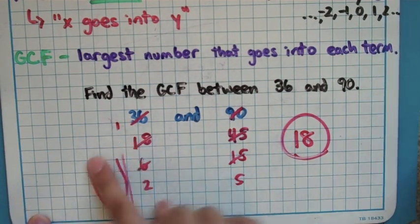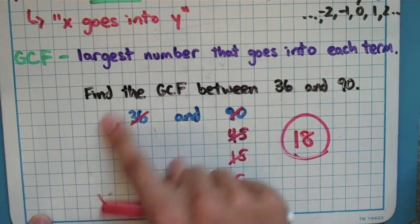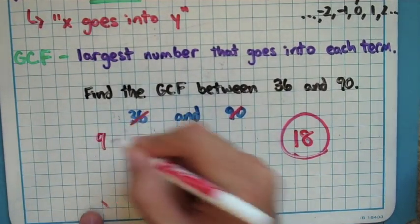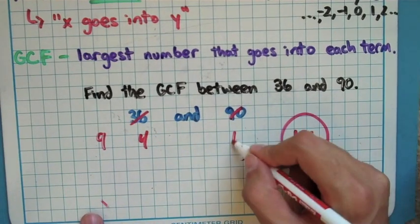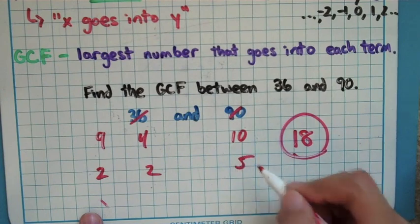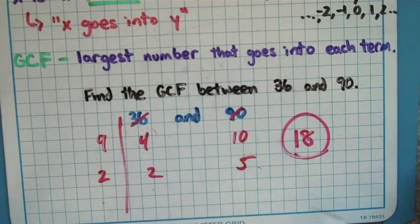Now that's not to say I had to pick 2 and 3 here. I could have picked bigger numbers. Like if I would have saw right away, oh, 9 goes into both of these. Then I'd be down to 4 and 10 already, and I could say, oh, 2 goes into those. You get 2 and 5, and it's a quicker way. So picking bigger numbers is still good because 9 times 2 is still 18, but it's not essential. You can pick any two numbers you want.